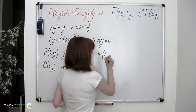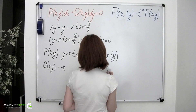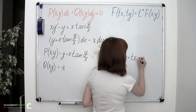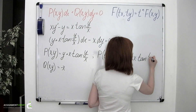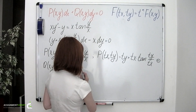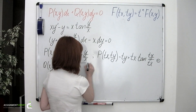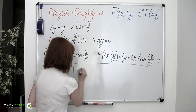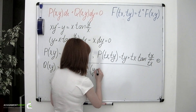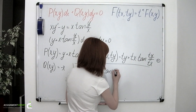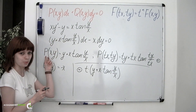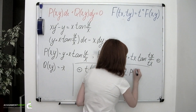P of tx and ty equals ty plus tx times the tangent of ty over tx. Obviously, t can be factored out, which leaves us with t multiplied by y plus x times tangent of y over x. The expression in brackets is nothing else than the initial function P of x, y. So we can write t multiplied by P of x, y.